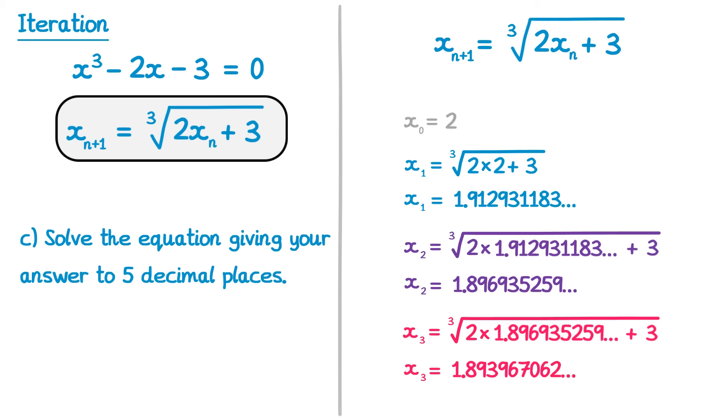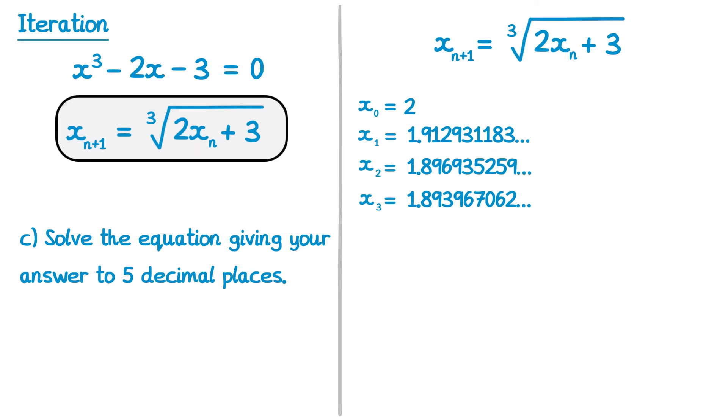Part C asks us to solve the equation, giving our answer to 5 decimal places. If we think back, this was our original plan with the question. We wanted to solve the equation. So far we were given the x0 value of 2, and we calculated x1, x2, and x3. Each of these successive iterations is an approximation to the solution. The further you go, the better the answer. So to find the solution, we need to keep this going. We can find x4, x5, and so on.